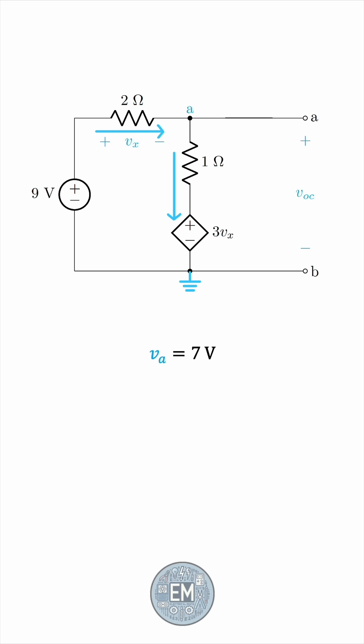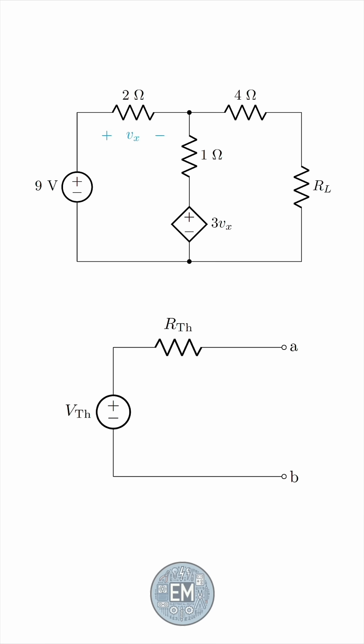This is Va, the voltage between A and B, because B is our ground. So, this is the open circuit voltage we're after. With this, we have found V Thevenin, and to get R Thevenin, we'll short terminals A and B, and find the short circuit current between the terminals.